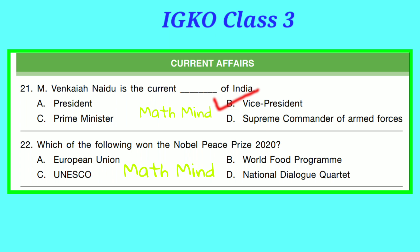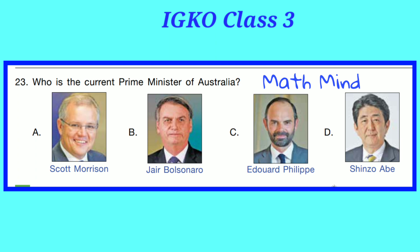Question No. 22. Which of the following won the Nobel Peace Prize 2020? Option B is correct — World Food Programme. Question No. 23. Who is the current Prime Minister of Australia? Option A is correct — Scott Morrison.